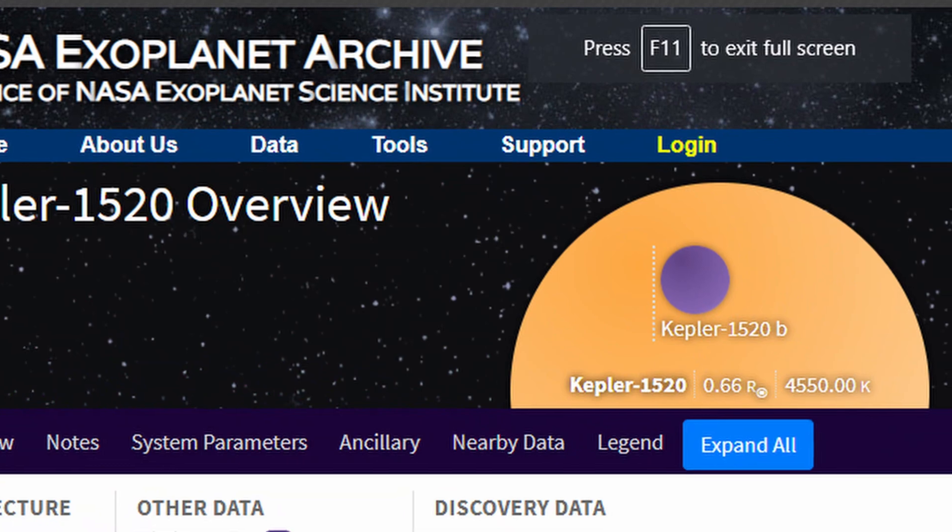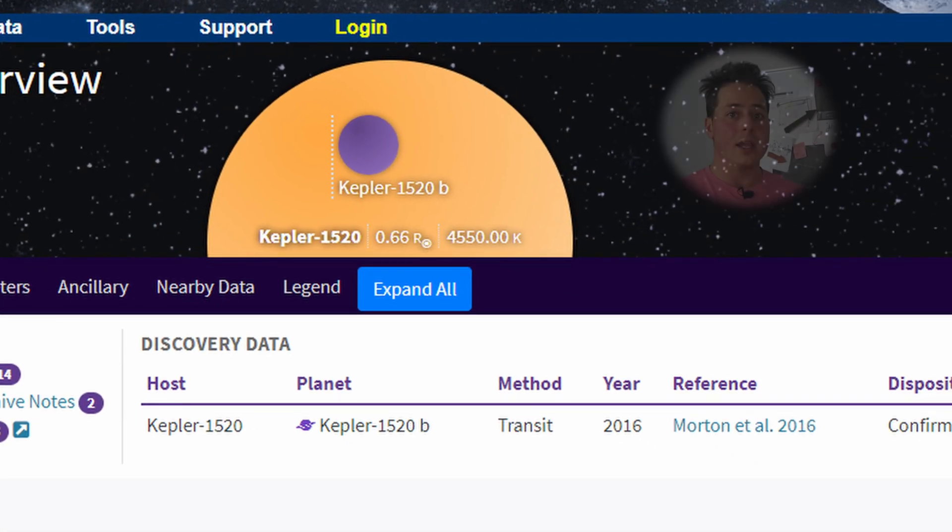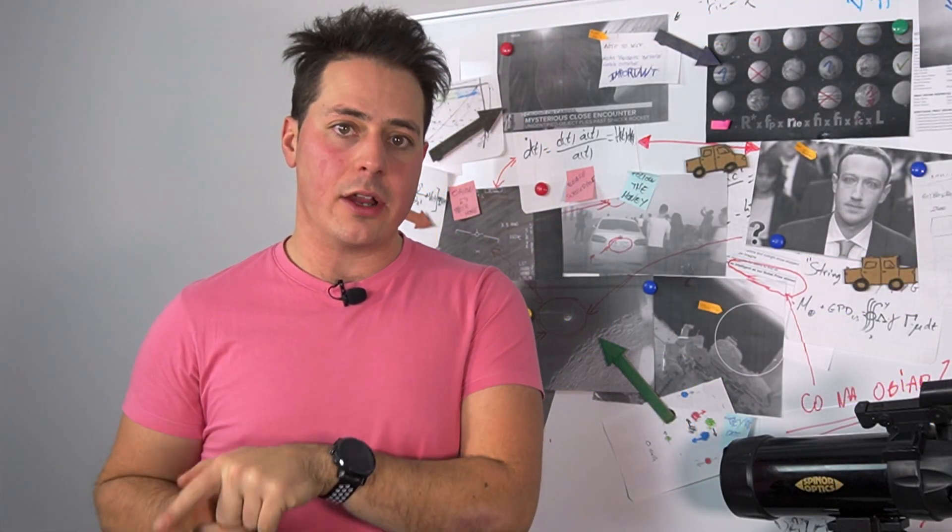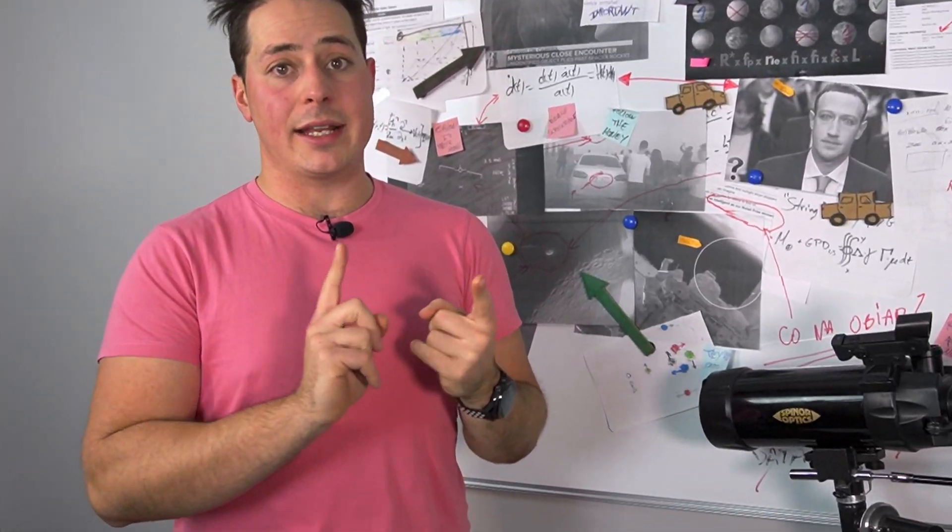I mean, on Earth we can see them with our technology. Famously, Kepler 1520 B - I know, very sexy name - was discovered using this technique. However, for aliens to see Earth, they would need to be extremely patient.